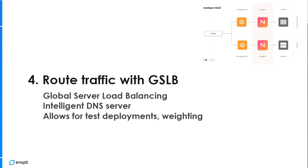GSLB also allows you to do test deployments very easily and weight traffic. If you're setting up infrastructure in Azure as well as AWS, you can say: send 5% of my users there, or just users from our office. You could put in your office's IP address range and silently route those people to the new data center to see if there are any alerts or complaints — without telling them. It really makes the function of interacting with multiple clouds much easier.